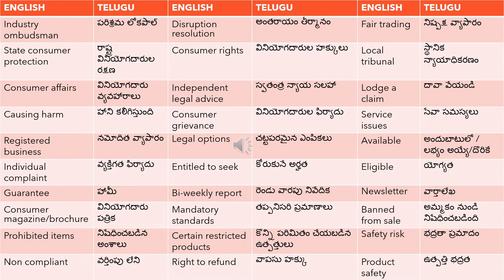'Mandatory standards' means 'tappansari pramana' — 'tappansaraina pramana'. 'Banned from sale' means 'ammakav nundi nishay dhi nchabbadindi'. For example, 'these items are banned from sale in Australia' — 'ee vastuvulu Australia lo ammakav nundi nishay dhi nchabbadindi'.